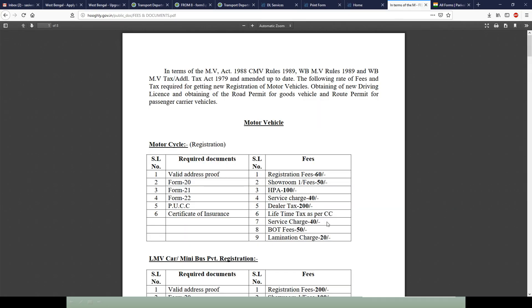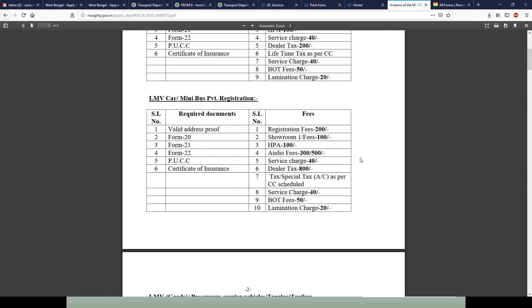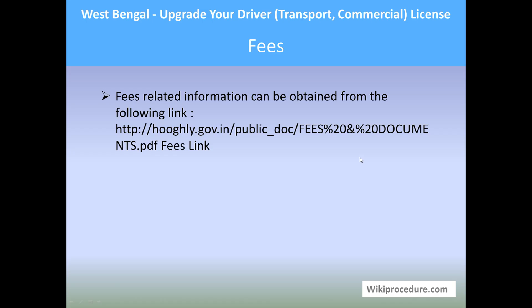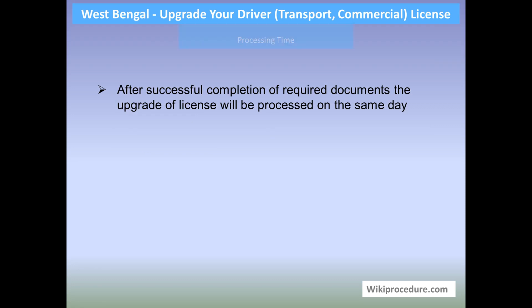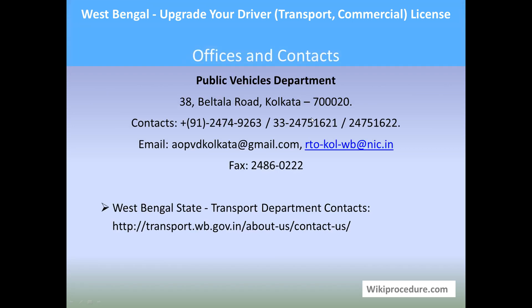The link provided below will help you reach a page listing many services and applicable fees, so have a look at that page to understand the amount you are going to pay. Processing time: after successful completion of the required documents, the upgraded license will be processed on the same day. Offices and contacts: Public Vehicles Department, Beltala Road, 38 Beltala Road, Kolkata 700020. Contact email and fax number are provided here for personal interactions with officials. The link provided here will also help you reach the contact page.